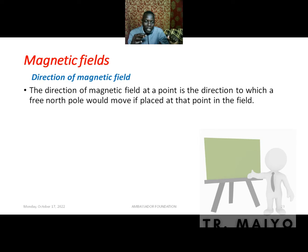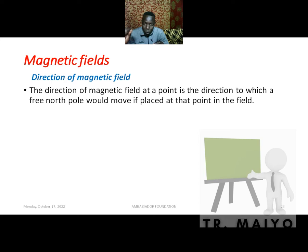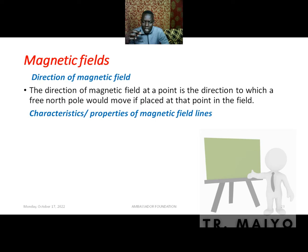If you are told to define the direction of a magnetic field, what will you say? The direction of a magnetic field at a point is the direction in which a free north pole would move if placed at that point in the field. For example, if you place a magnet in a room and it points toward the door, that direction is the direction of the magnetic field at that point.